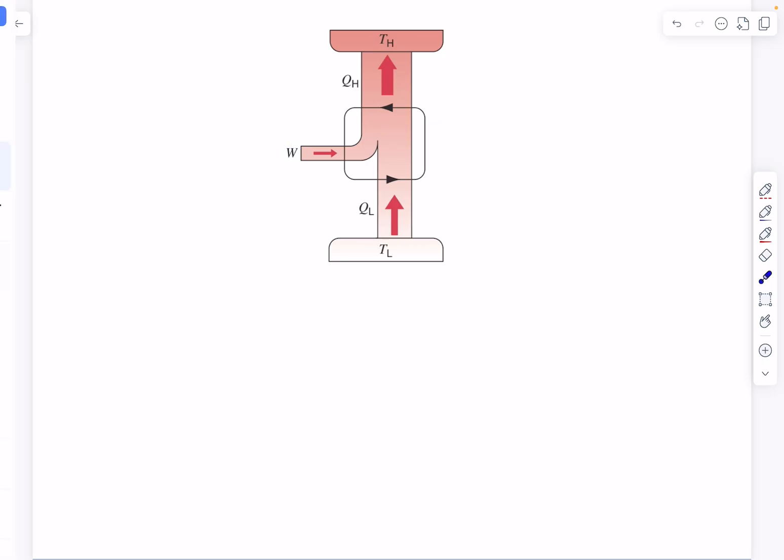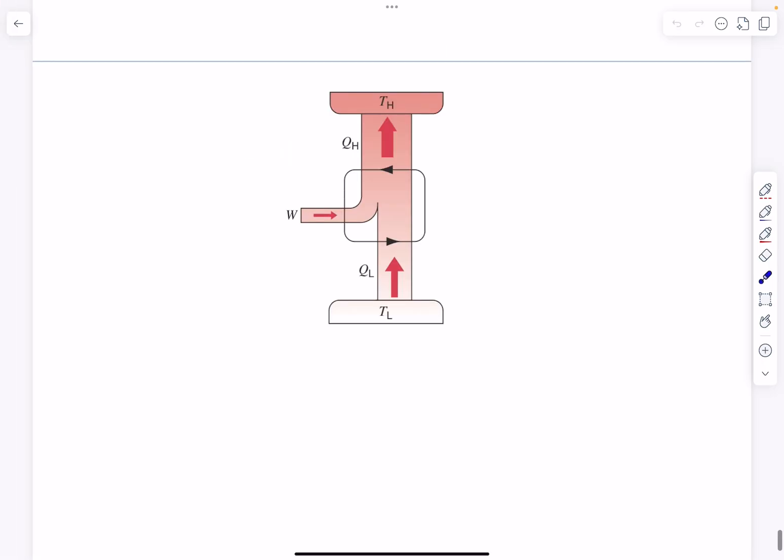What we expect the refrigerator to do is extract out as much heat as possible from the low temperature reservoir. In the case of a refrigerator, it's the inside compartment. In this case, the room is the low temperature reservoir in the case of an air conditioner.